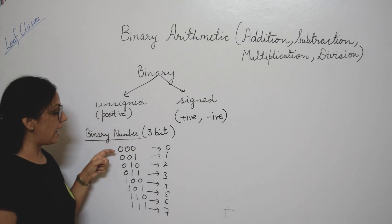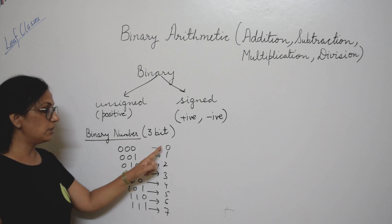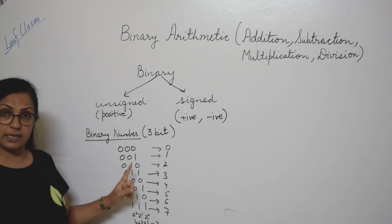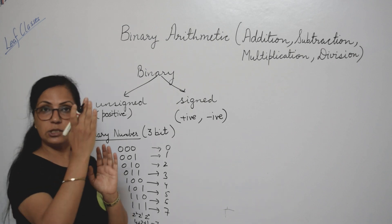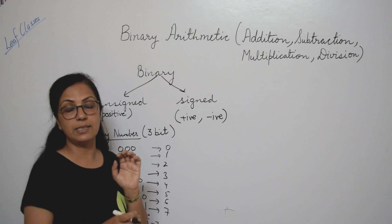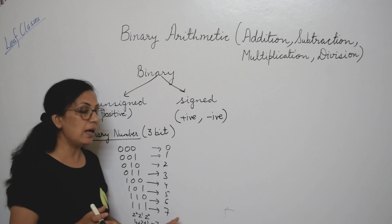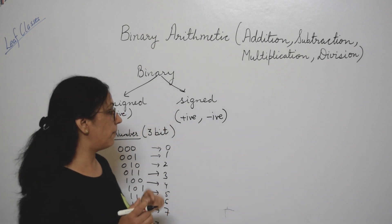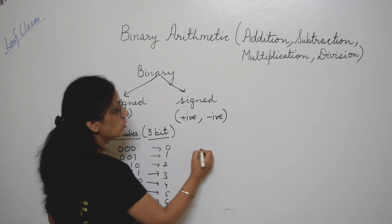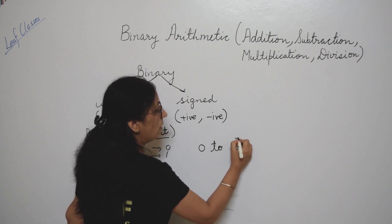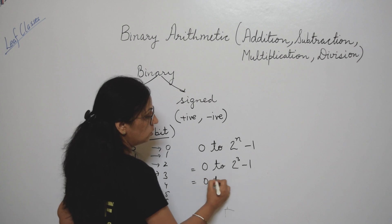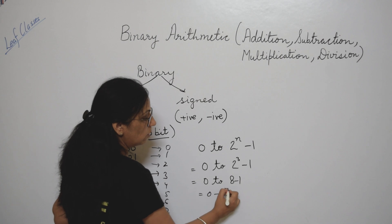So if it is a 3-bit number, we have a total of 8 representations of binary numbers, from 0 to 7. For 1 1 1, the calculation is: 2 to the power 0 plus 2 to the power 1 plus 2 to the power 2, that means 4 plus 2 plus 1, which equals 7. The shortcut is the positional values 1, 2, 4, 8, 16 — add the values where 1 is present and skip the zeros. The formula is: for n bits, unsigned numbers range from 0 to 2 to the power n minus 1. For 3-bit: 2 to the power 3 minus 1 equals 8 minus 1, so from 0 to 7.